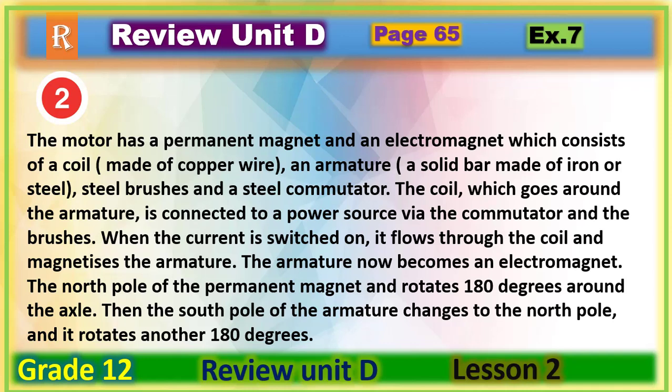Step two: the motor has a permanent magnet and an electromagnet which consists of a coil made of copper wire, an armature — a solid bar made of iron or steel — brushes, and a steel commutator. The coil around the armature is connected to a power source via the commutator and the brushes. When the current is switched on, it flows through the coil and magnetizes the armature, which now becomes an electromagnet.